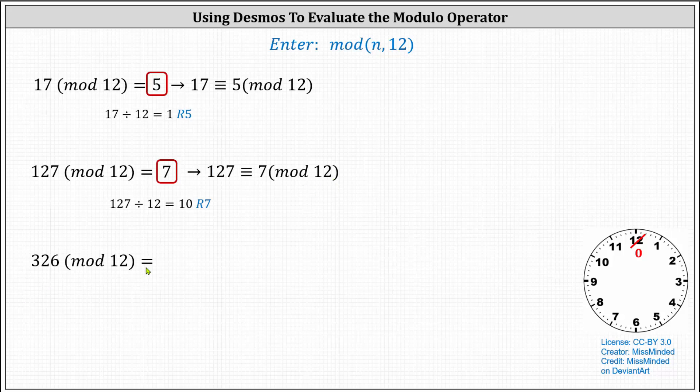And finally, we have 326 mod 12, which again is equal to the remainder when 326 is divided by 12, which we can see is two.